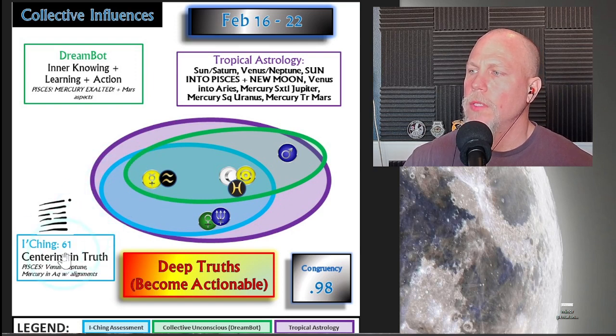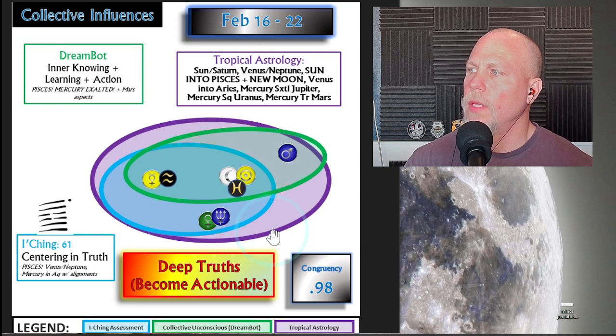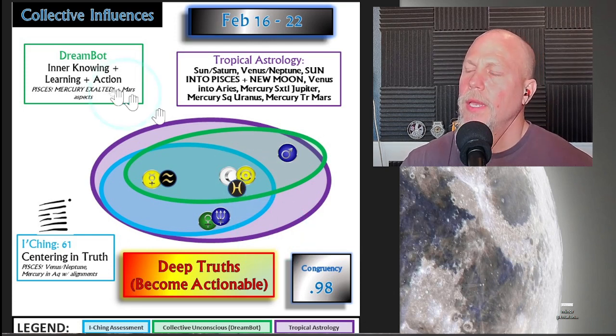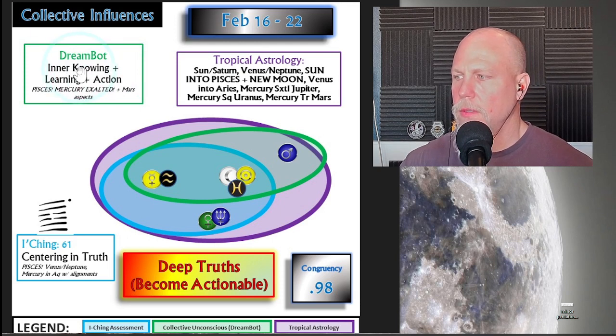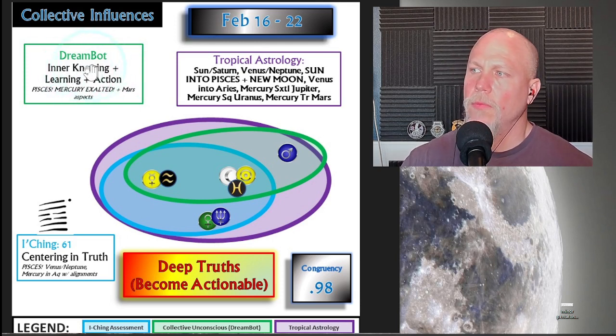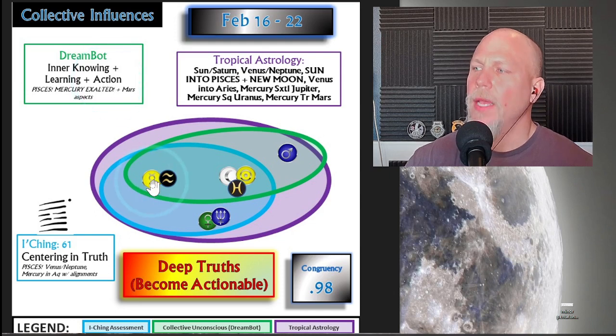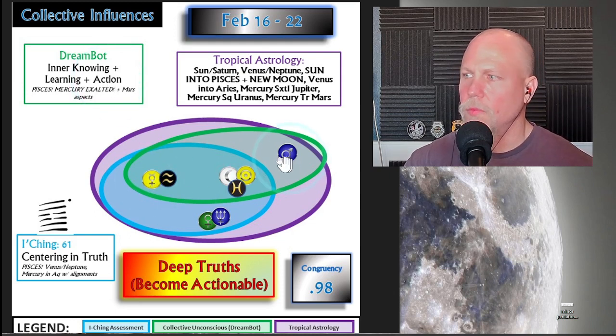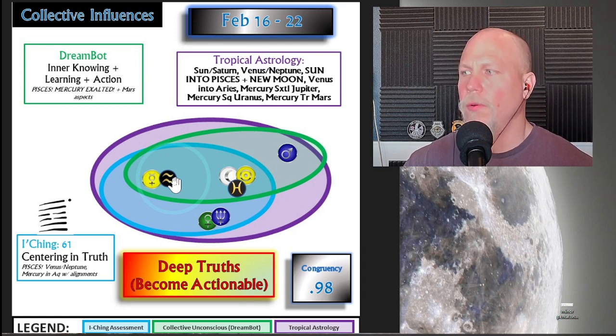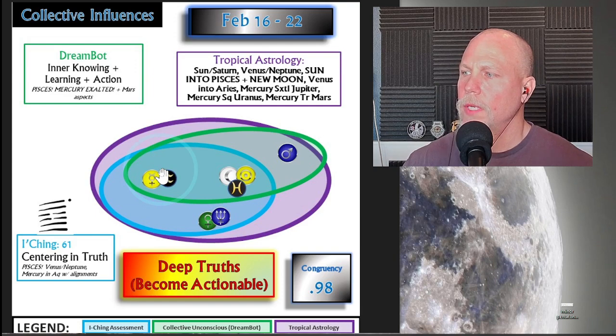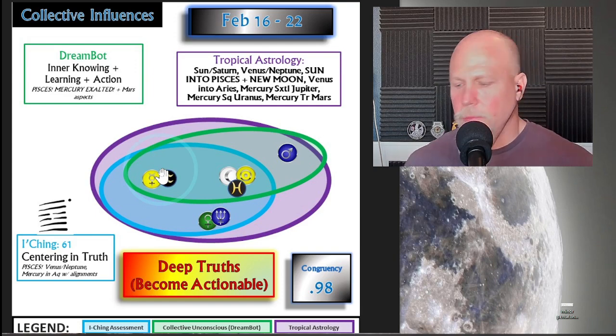So that is included in this blue circle. The blue circle represents the I Ching. The magenta circle represents the tropical astrology in addition to the symbols. And then look what DreamBot has. This is the collective unconscious, our version of it. And we have inner knowing. So that's totally Pisces. We have learning. That's Mercury exalted. And we have action. That's Mercury trine Mars with all this, which goes perfect, exact, on the last day of our surf week, this 22nd. All right. So with that, let's get started.